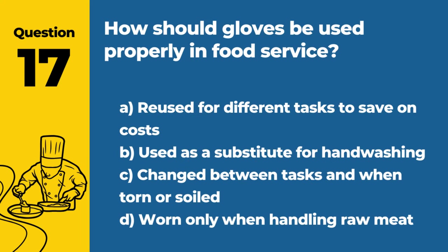Question 17. How should gloves be used properly in food service? Answer: C. Changed between tasks and when torn or soiled. Proper glove use prevents cross-contamination between different food items and surfaces.